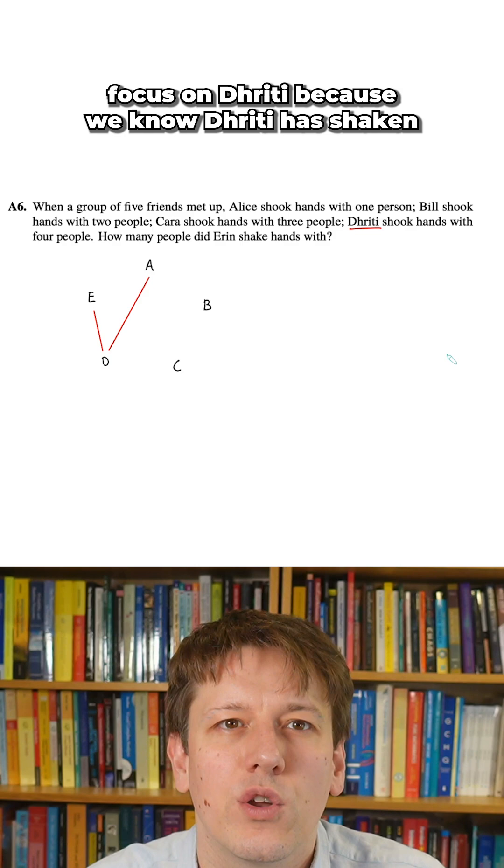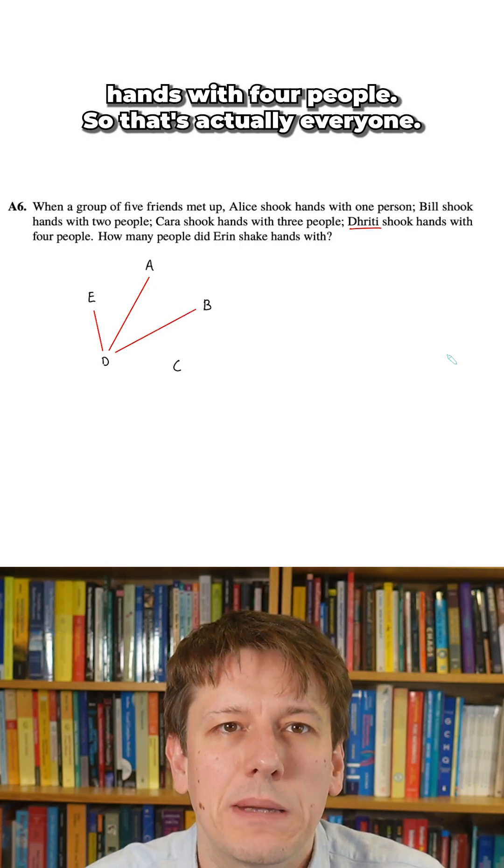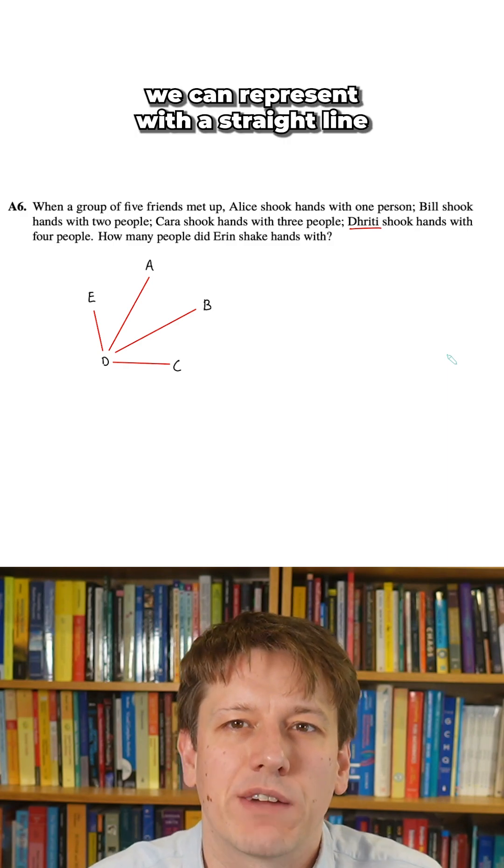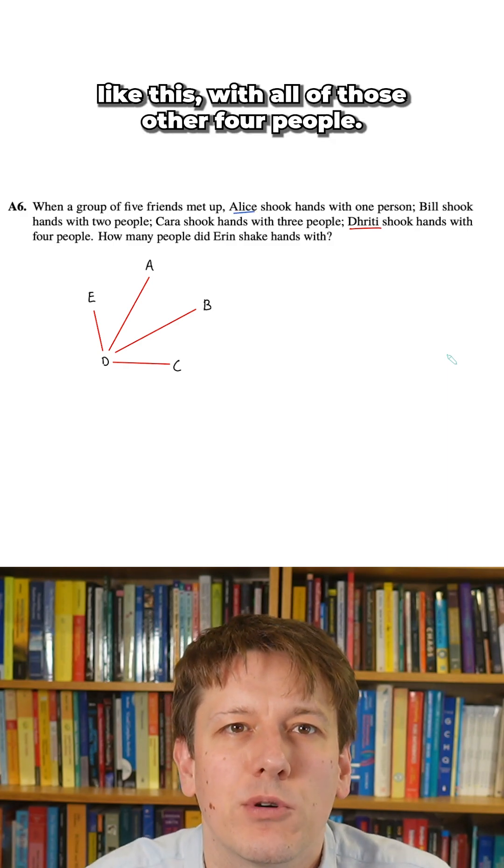And to begin with, let's focus on Dritti, because we know Dritti has shaken hands with four people. So that's actually everyone. So it must be a handshake that we can represent with a straight line like this with all of those other four people.